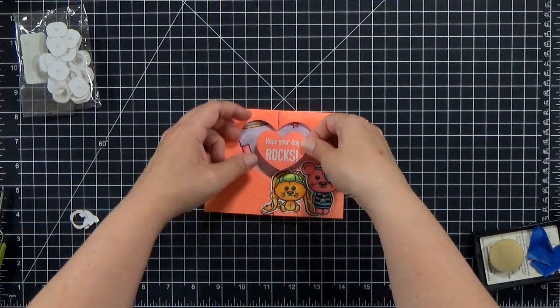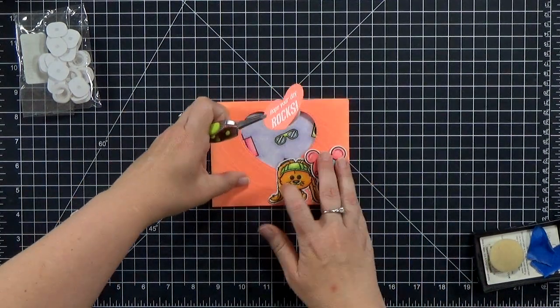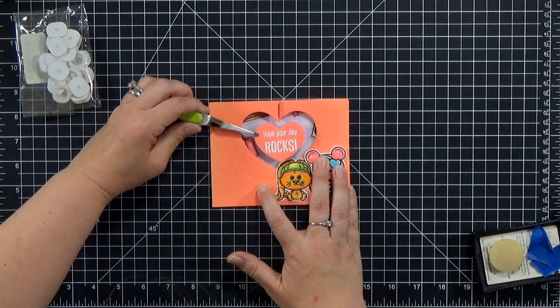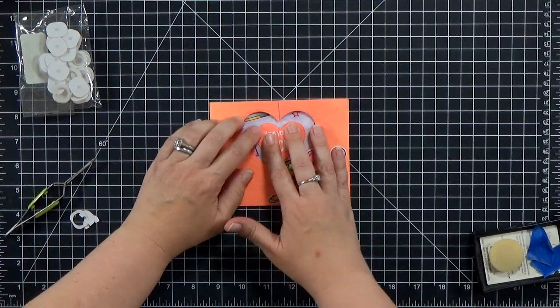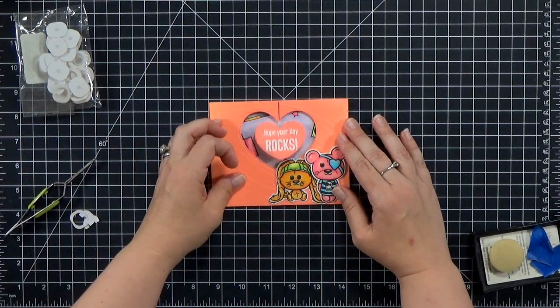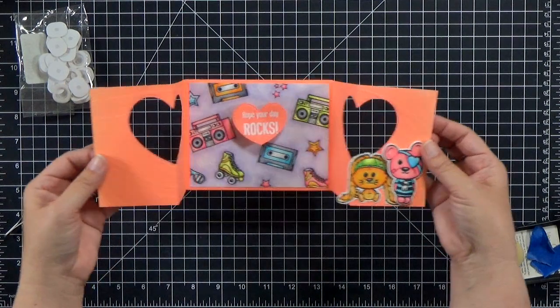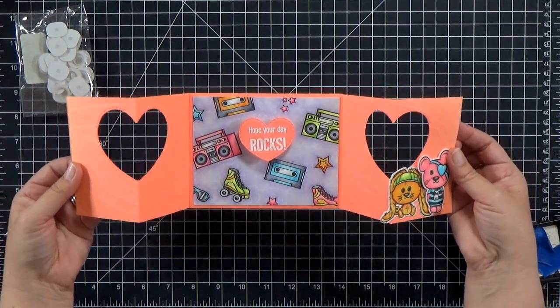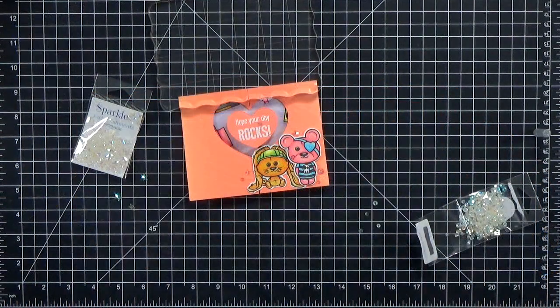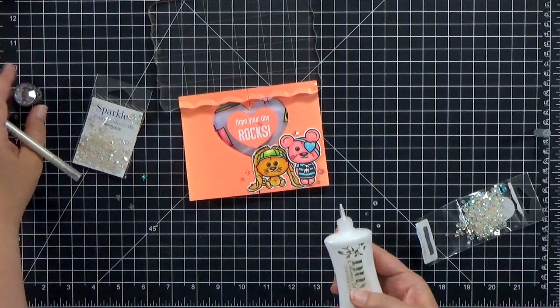You'll find them more useful. And they have adhesive on both sides. So I just adhered it to my heart and then I'm going to stick it to my card. And I like to use the tweezers for things like this just because my fingers sometimes are in the way and it's hard to line it up. And now we've got a fun little action wobbler holding our sentiment in place.